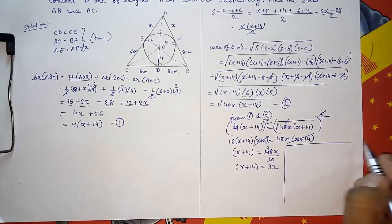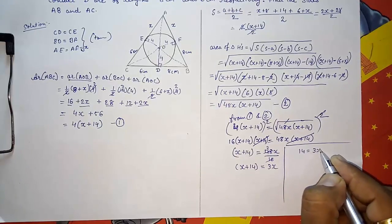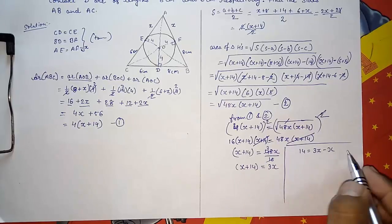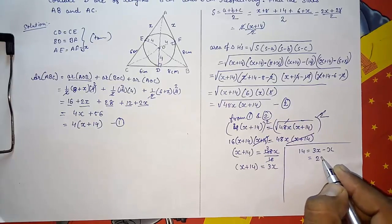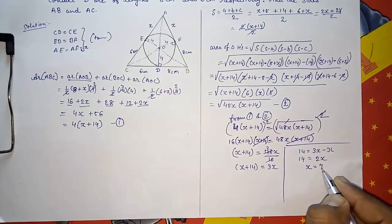Now I am writing it here. So what will happen? 14 is equal to 3X minus X. I had taken that X on the other side. So it will be 2X is equal to 14. So X is equal to 14 by 2, that is 7.